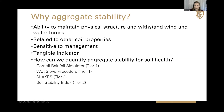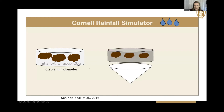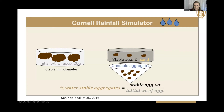The first was the Cornell rainfall simulator — it's a very popular procedure and it's also part of the CASH test. This starts off with about 20 grams of air-dried aggregates placed on top of a sieve. Those aggregates then undergo a rainfall event for about five minutes, and the unstable aggregates are washed into a filter paper below. What's remaining on top of that sieve are stable aggregates and sand, which are separated out. The output unit for this method is percent water stable aggregates.